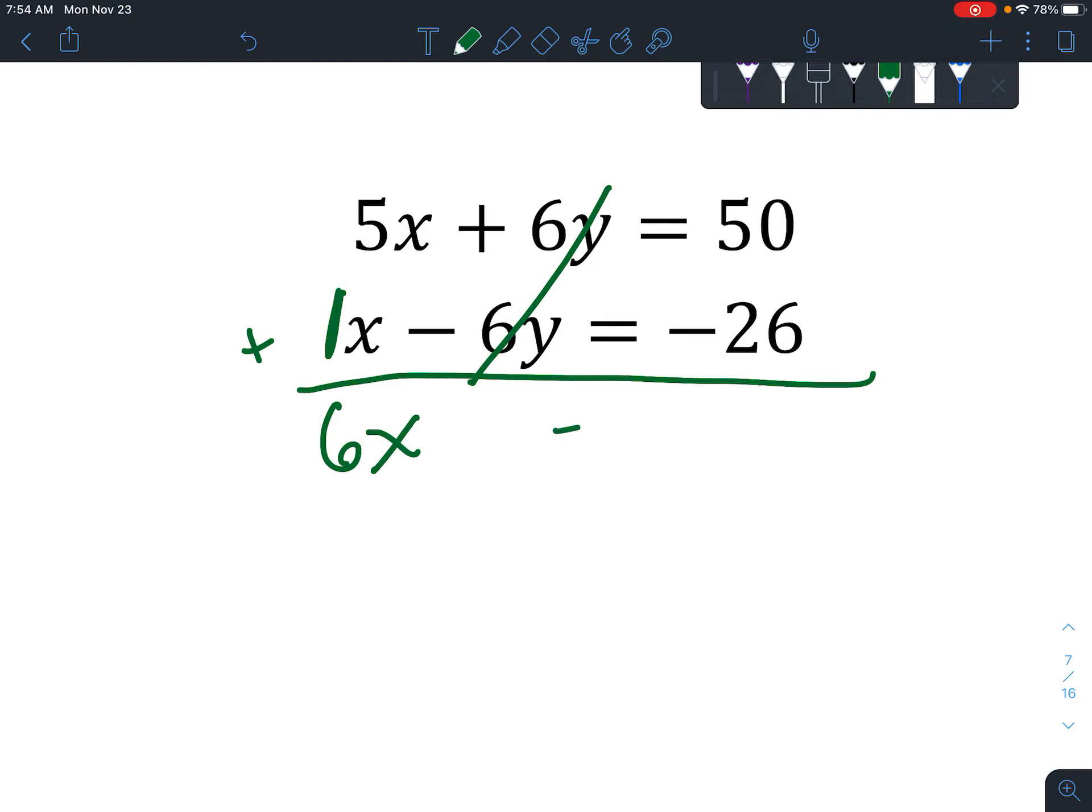That is gone. You don't even really have to write the 0. If in your head you realize that's gone, you can say 6x equals 50 minus 26. The numbers are a little larger. Think of it as 10 minus 6 is 4. 4 minus 2 is 2. And then we have to divide both sides by 6. To get x equals 4.